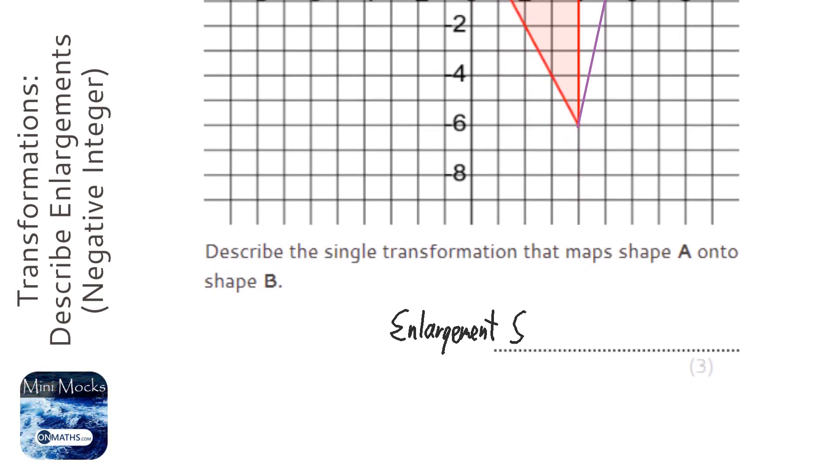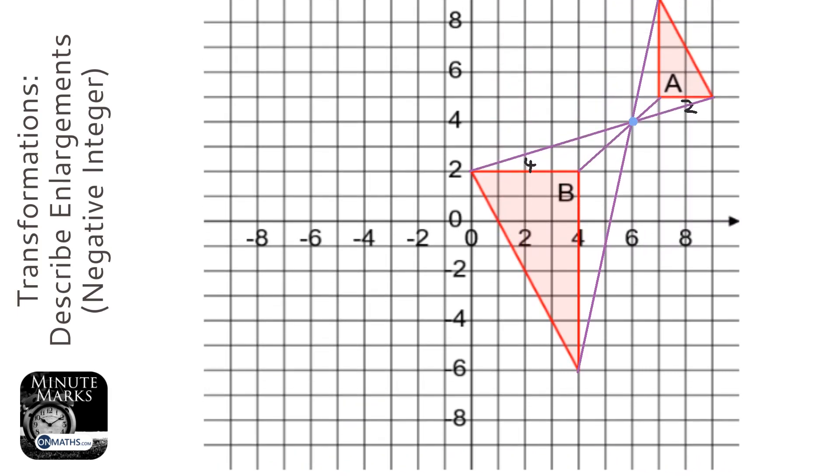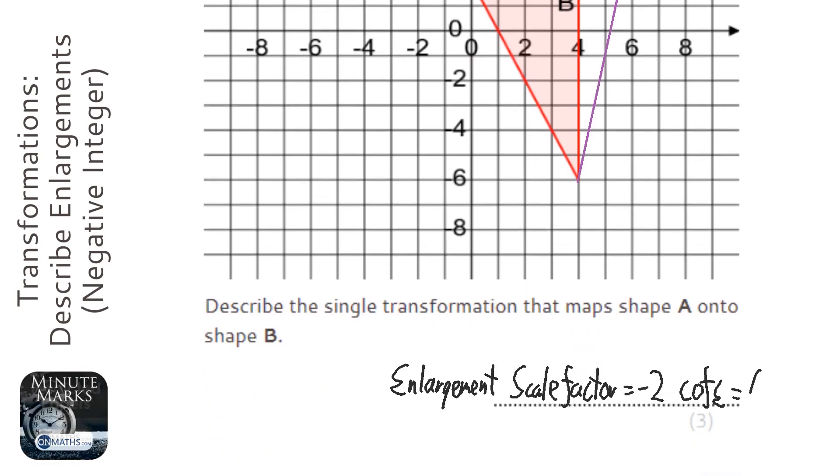So scale factor is negative two, and the center of enlargement is going to be at—what is it—six, four.